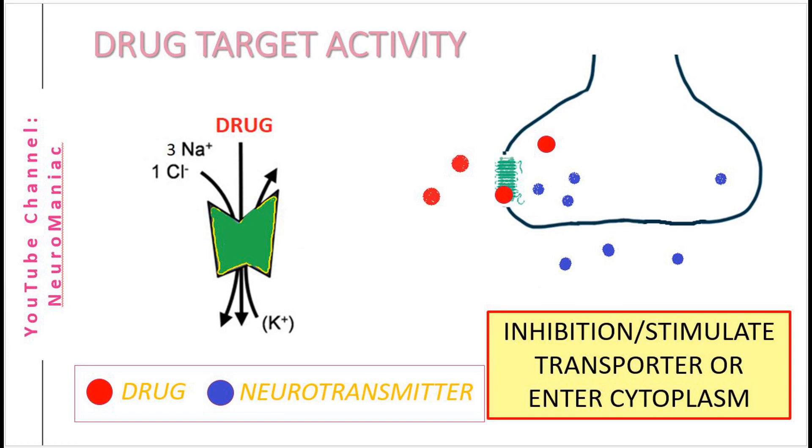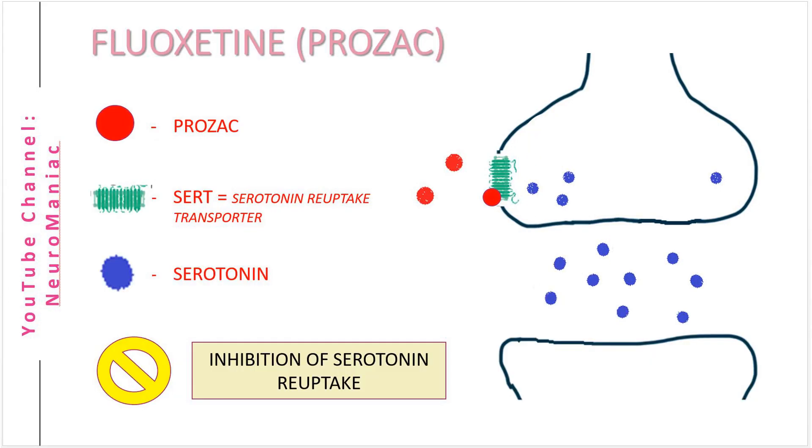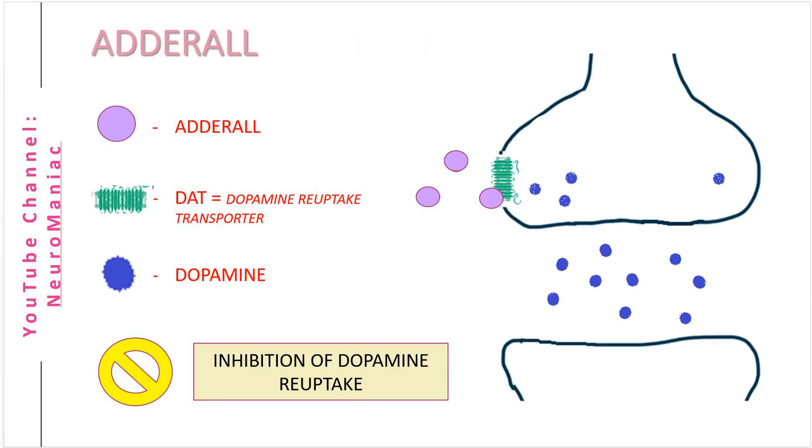Popular examples of therapeutic drugs that act on these transporters include Prozac, a serotonin transporter inhibitor for depression, or Adderall, a dopamine transporter inhibitor for the treatment of ADHD.